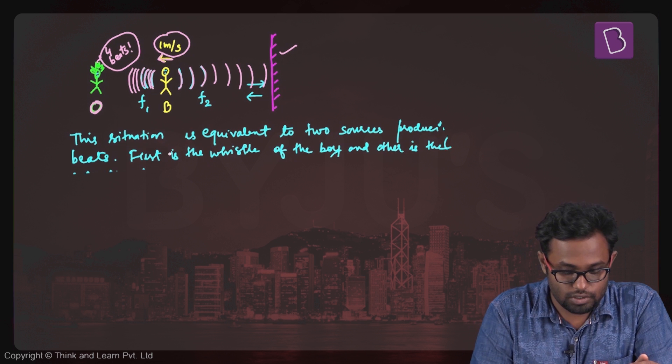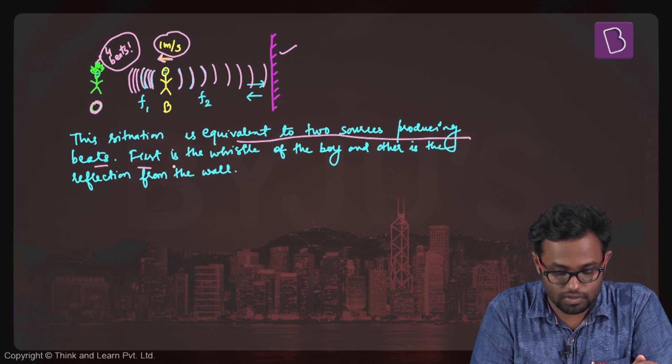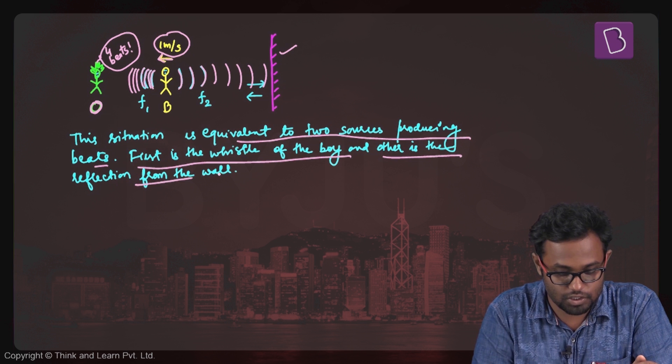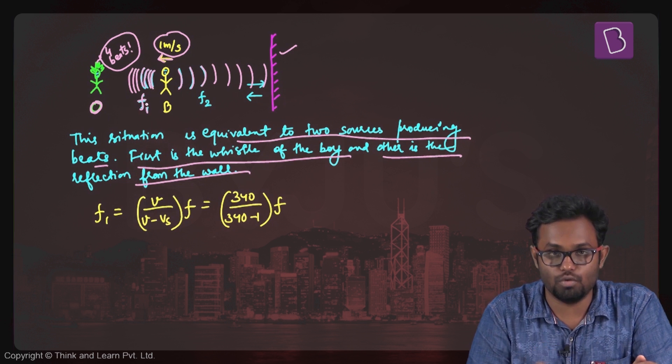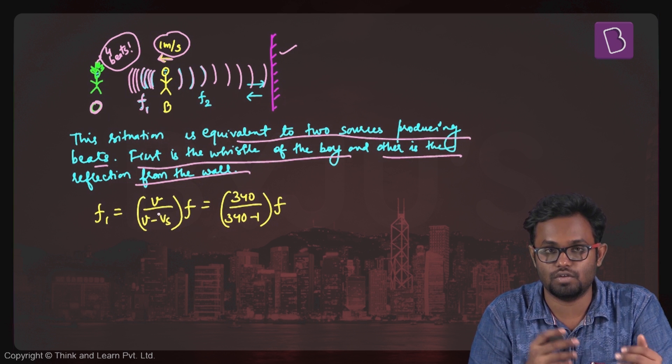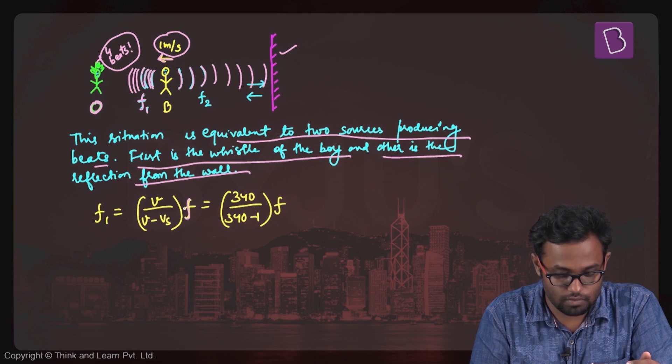The situation is equivalent to two sources producing beats. First is the whistle of the boy and the other is the reflection from the wall. So f1 will be equal to, as the source is moving, you know the formula v upon v minus vs, the frequency would be increased times the original frequency f. So 340 upon 340 minus 1 into f.